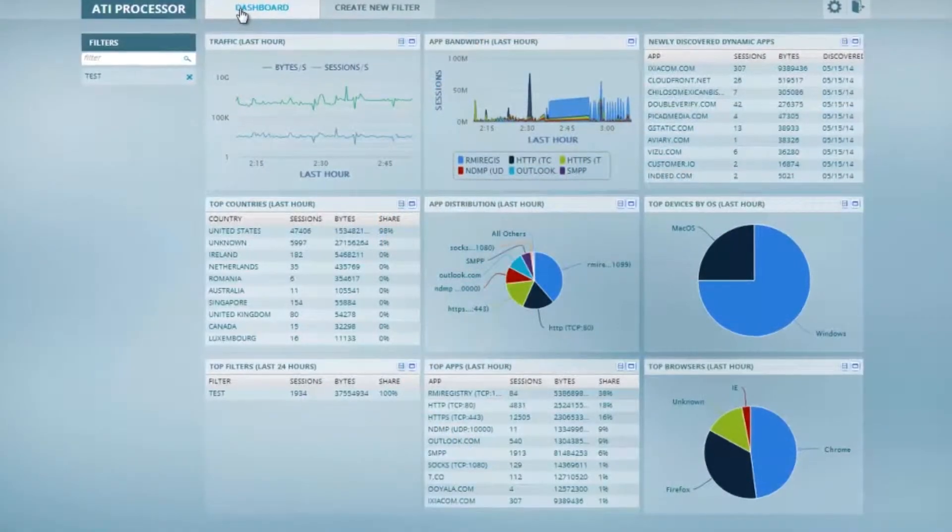We're able to bring that up to layer seven and look at applications themselves and look inside the packet headers and classify that traffic, which allows us to make much more intelligent decisions based on what we see.